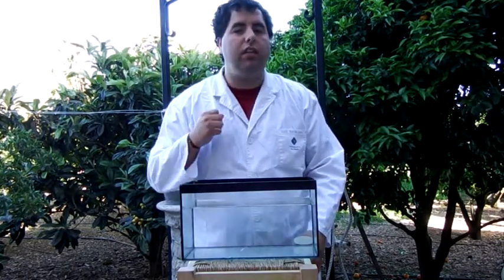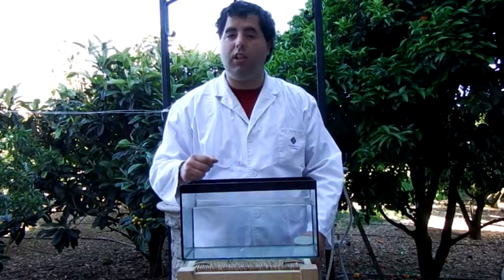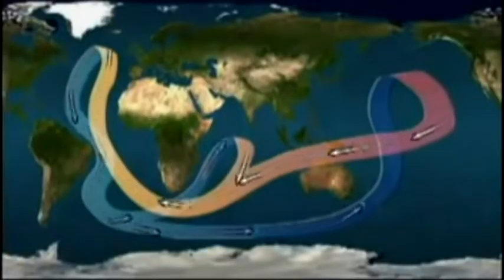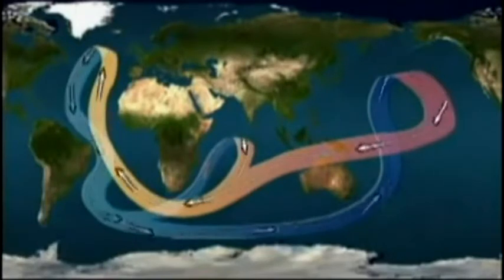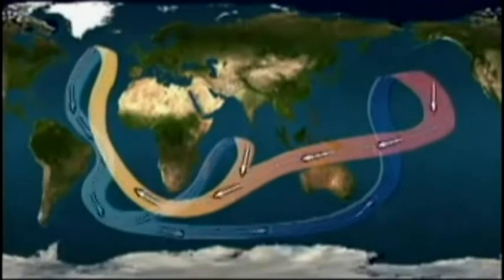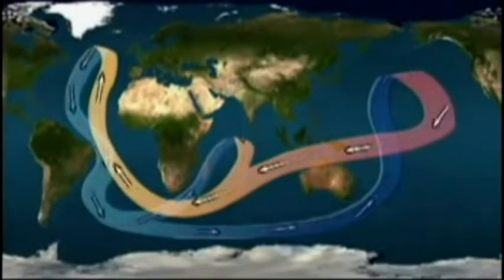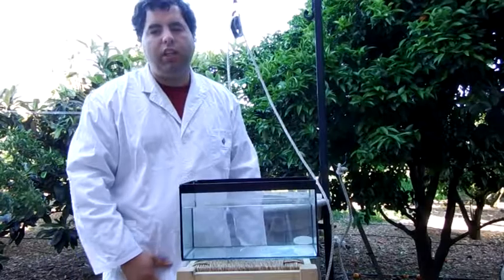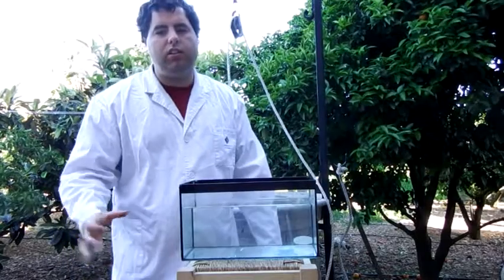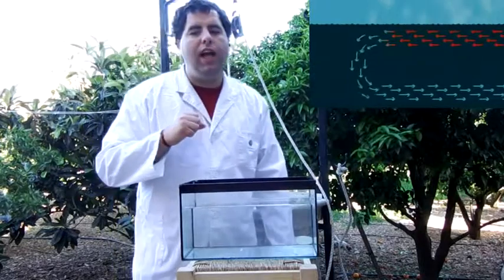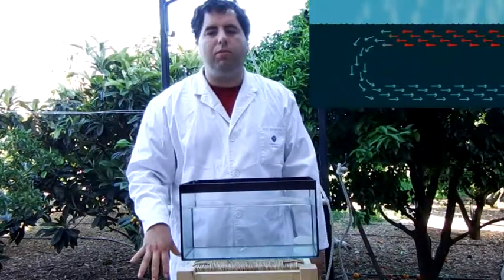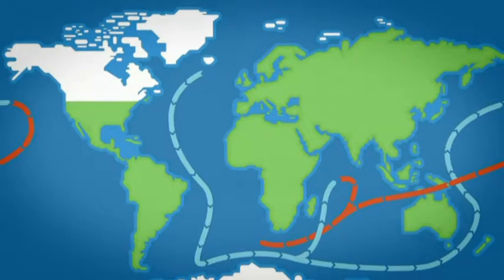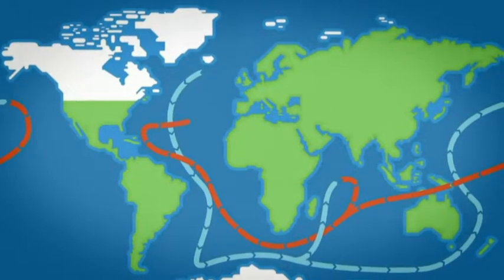Ocean currents, as you see in the animation, are a mass of sea water in motion with respect to the water that surrounds it. Water masses have different density, salinity and temperature. The water cools down at the poles and is immersed to the bottom, while the equator is hot and emerges to the surface.